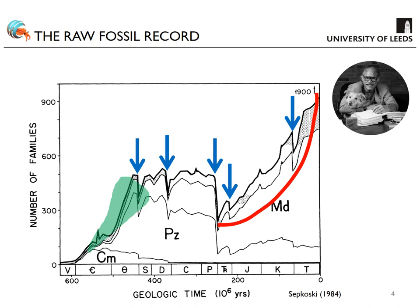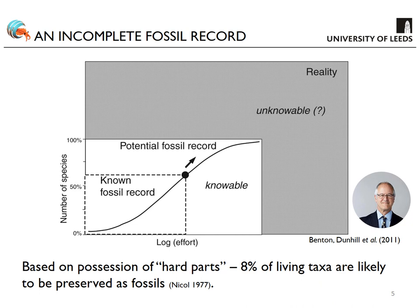The problem is this data is incomplete. Can we trust Sepkoski's diversity curve given that it's derived from raw fossil data? A diagram I published with Mike Benton and colleagues — Mike being another prominent figure in the sampling bias debate and my PhD supervisor — really effectively shows that of all life ever to have existed, we only know a very small proportion.